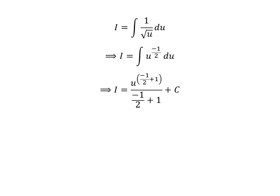The integration of u to the power minus half is u to the power minus half plus 1 upon minus half plus 1 plus capital C. Capital C is the arbitrary constant of indefinite integral. Do not forget to add this constant in the end of any indefinite integral.